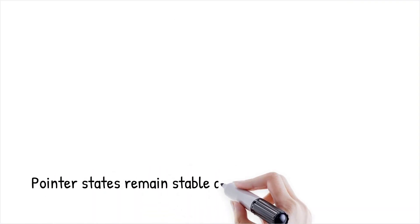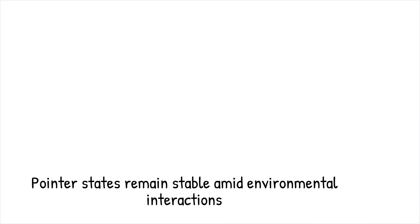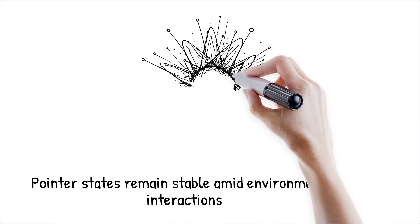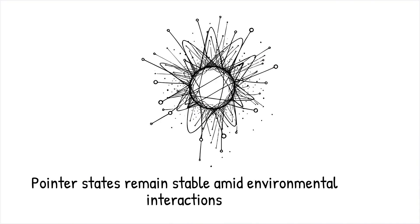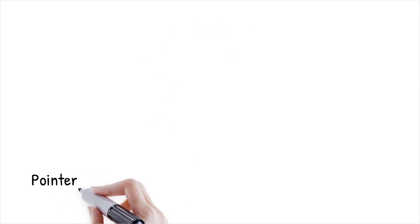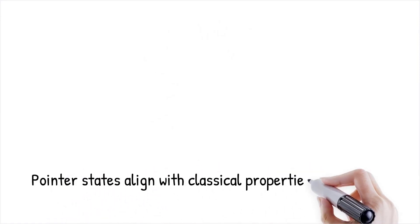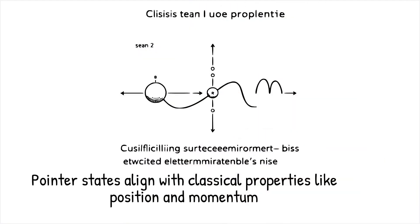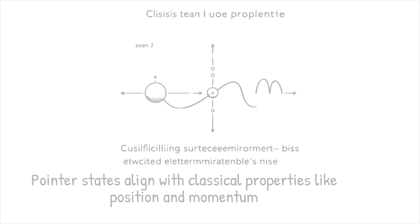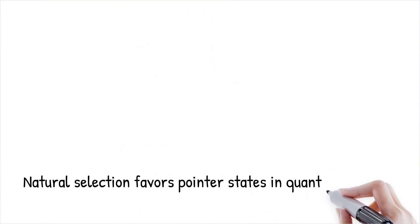Pointer states are quantum states that remain stable under interactions with the environment. They are robust enough to survive decoherence and are naturally selected by the environment because of their resilience. Pointer states often correspond to classical properties like position and momentum, which are less susceptible to environmental noise. The idea of pointer states is central to quantum Darwinism because they are the fittest quantum states, able to endure and proliferate while others fade away. This natural selection ensures that the classical properties of systems are those that can withstand environmental scrutiny.